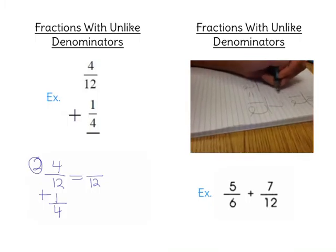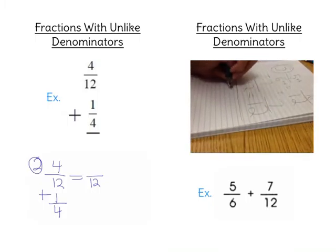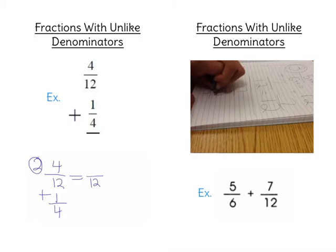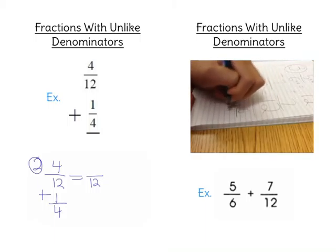Then just add this together, which is seventeen over twelve. This is a mixed number, so you divide. Seventeen divided by twelve, which is one and five-twelfths. So your answer is one and five-twelfths.